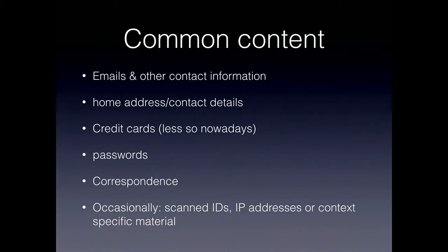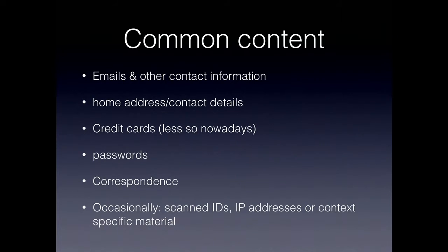What's some of the content we see in breaches? Emails, phone numbers, and other contact information are there as the personally identifiable piece. We also see home addresses and contact details. Interestingly, there's been a reduction in credit cards publicly disclosed — if you go back to the Stratfor breach in 2010, credit cards were in there a lot, but people have started to cotton on that they shouldn't hold that sort of information anymore. Things like correspondence, SMSs, or internal messaging may also be present, along with scanned IDs and IP addresses.